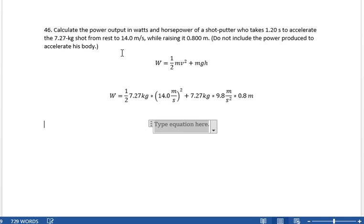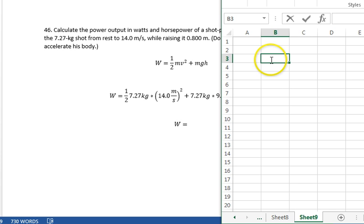This is the total amount of work done on the shot. Let's take a look at what all that means. So we've got 0.5 times 7.27 times 14 squared plus 7.27 times 9.8 times 0.8.